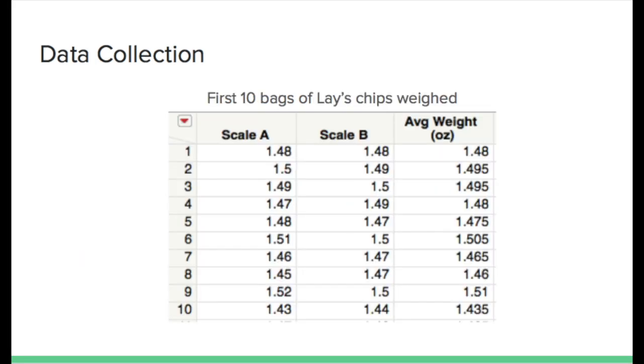On this slide, you can see that we have our data table from JMP. It's our first 10 inputs. And we have the measurements in ounces for scale A, scale B, and then to the right, the average weight in ounces of the two for our hypothesis testing.